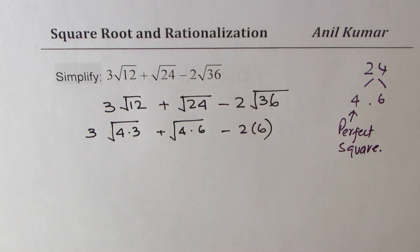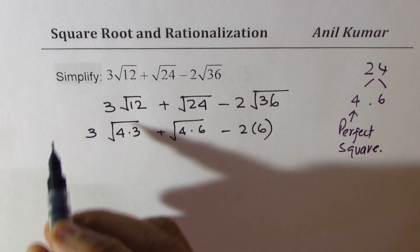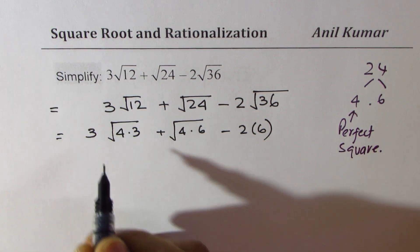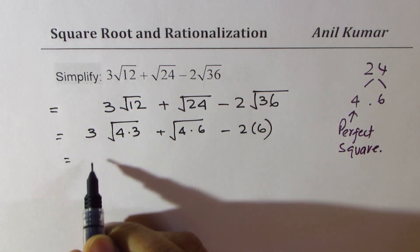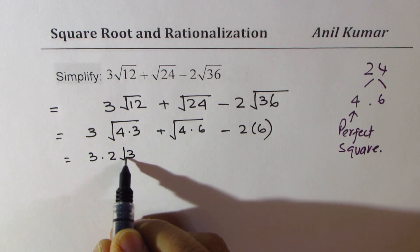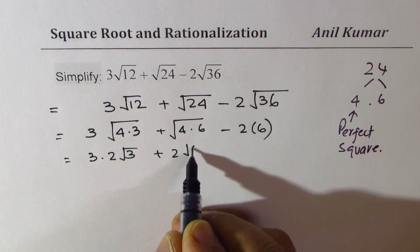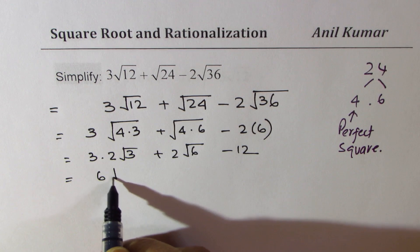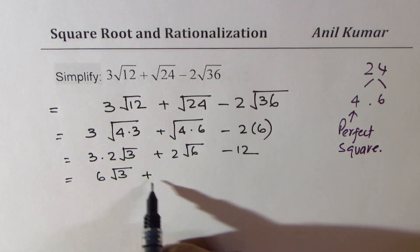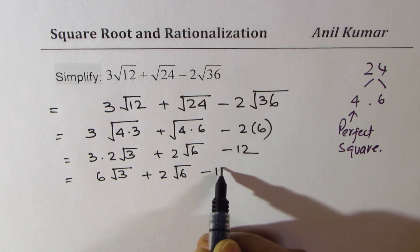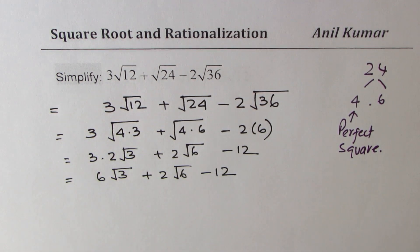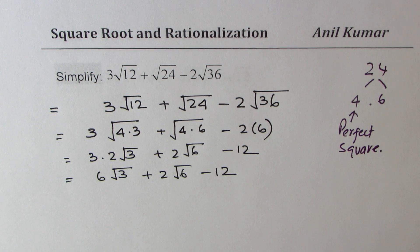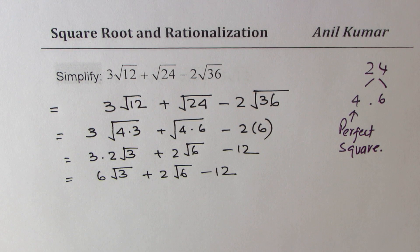Following that strategy: √4 = 2, so 3√12 = 3×2√3 = 6√3, and √24 = 2√6, and 2√36 = 12. So we have 6√3 + 2√6 − 12. Nothing is common and it cannot be simplified further, so this is the final simplified form of the given expression.